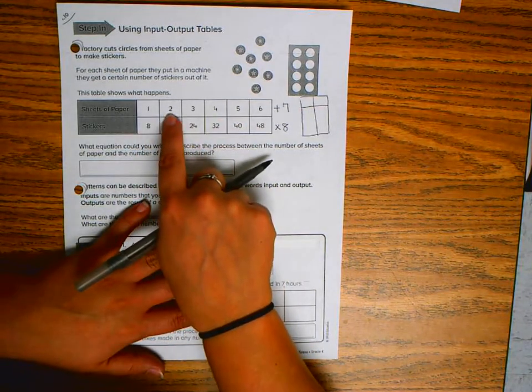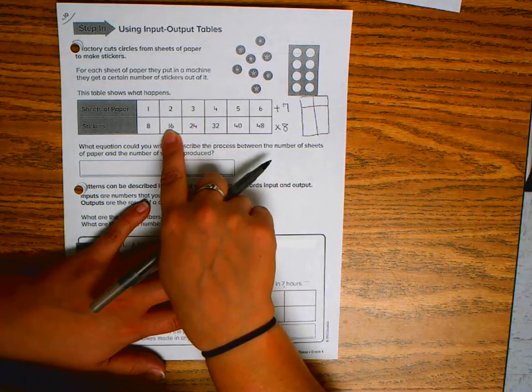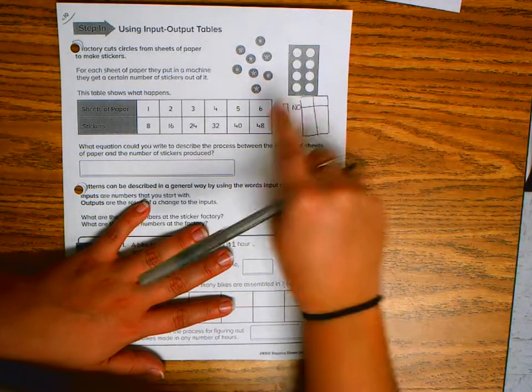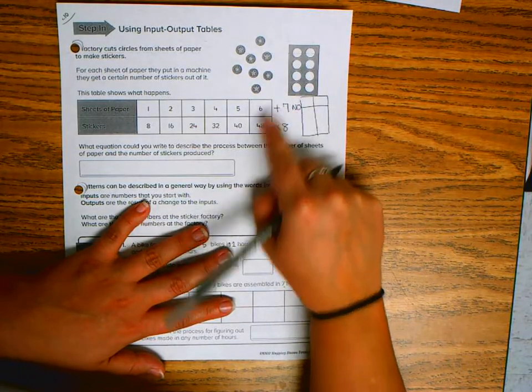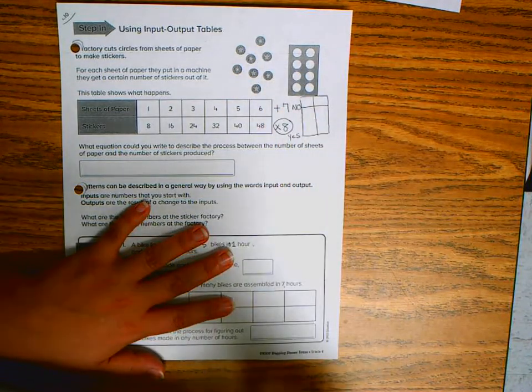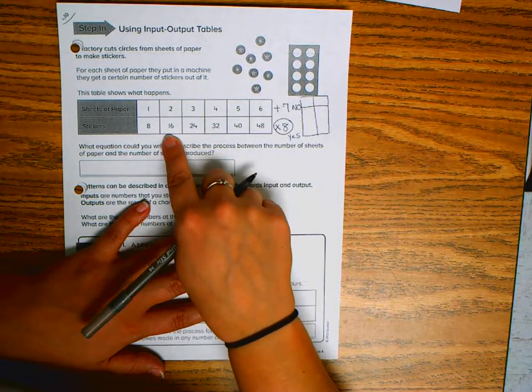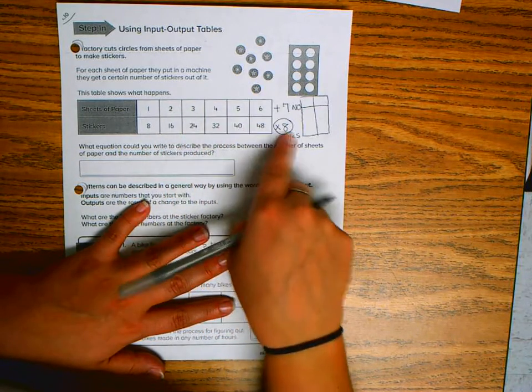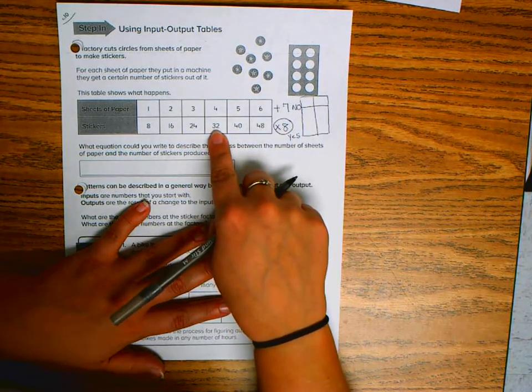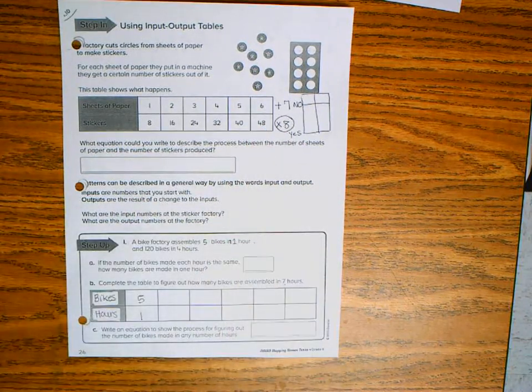Now I'm going to check. Is two plus seven sixteen? Well that answer would be no because two plus seven is nine. So no we're not adding, we must be multiplying. But let's check. Is one times eight eight? Yes. Is two times eight sixteen? Yes. Is three times eight twenty-four? Yes. Is four times eight thirty-two? Yes. Is five times eight forty? And is six times eight forty-eight? Those are both a yes.